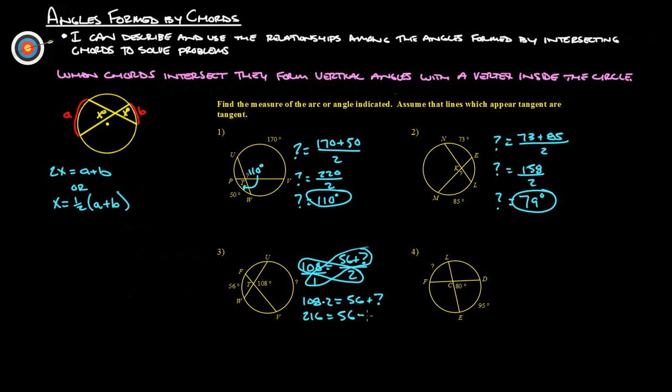56 plus question mark. So subtract 56 from both sides, and we get that question mark is, let's see, that goes away, 5 away from 21 is 160 degrees is what this arc right here is going to be.